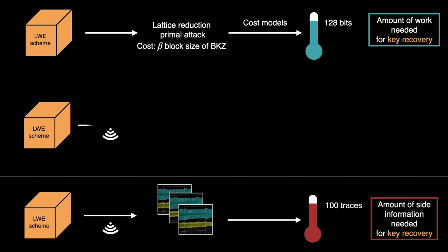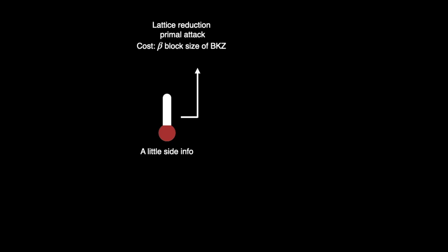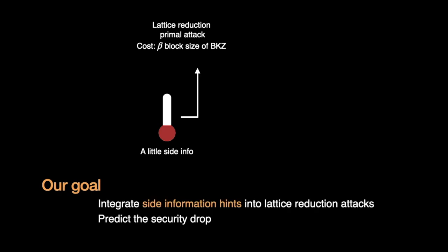Let us now imagine that we are in the middle. There is the side information, for example, we have one or two traces but they do not allow any key recovery. If we can include this slight information given by the trace in the lattice reduction, we can hope to decrease the bit security and we end up with a hybrid attack. The purpose of our work is precisely to include this little information and compute the new block size beta. This side information will be called hint. The integration technique has been done in ad hoc ways in the literature. Here, we aim at systematizing it and predicting the security drop for any instance.